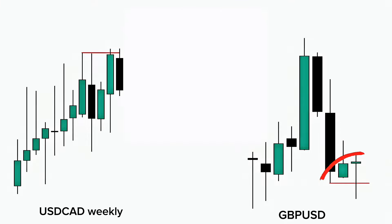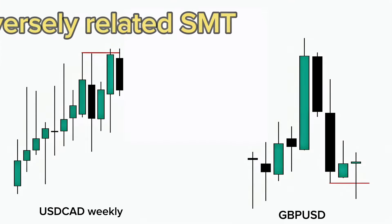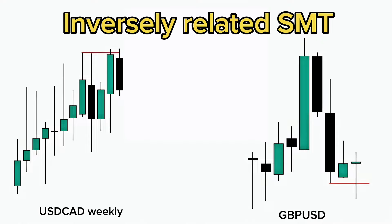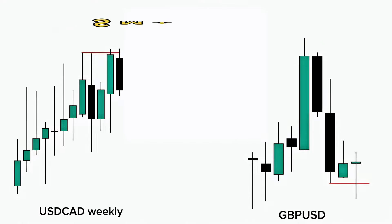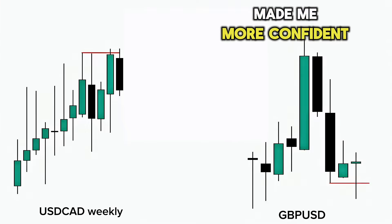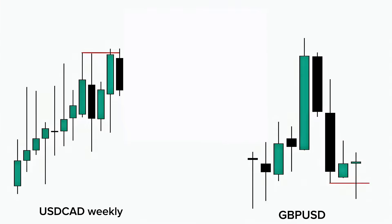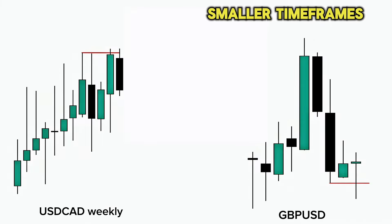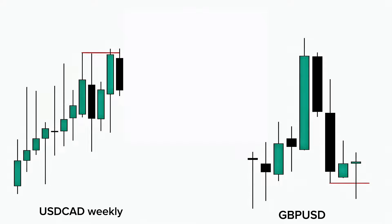After seeing this sweep on USD/CAD, I opened the chart of GBP and noticed that the price has swept previous week's lows and liquidity has been taken there too. The reason for opening the GBP chart is that it is the SMT pair of USD/CAD — they are inversely related to each other. Inversely related SMT pairs mean that if one asset goes up, the other goes down. Since I am bearish on USD/CAD, seeing a bullish sweep on GBP made me more confident in my bearish bias. Now I will shift to the four-hour time frame for step two.